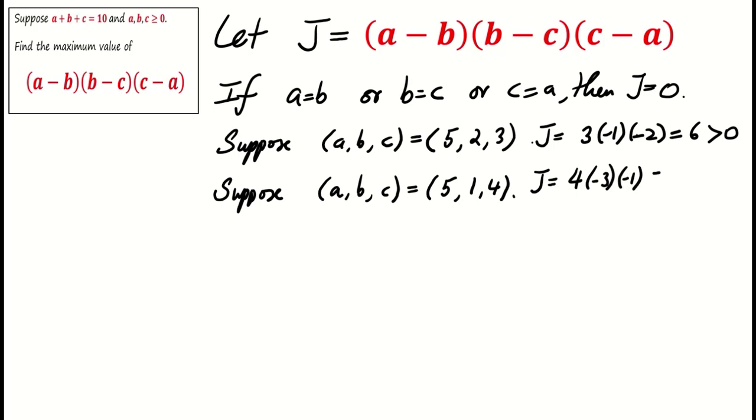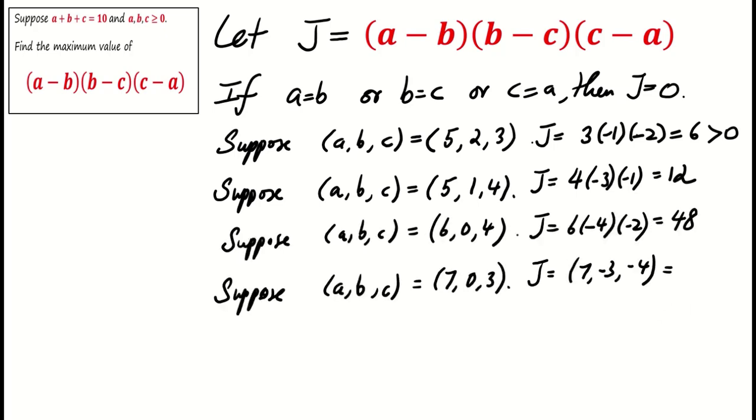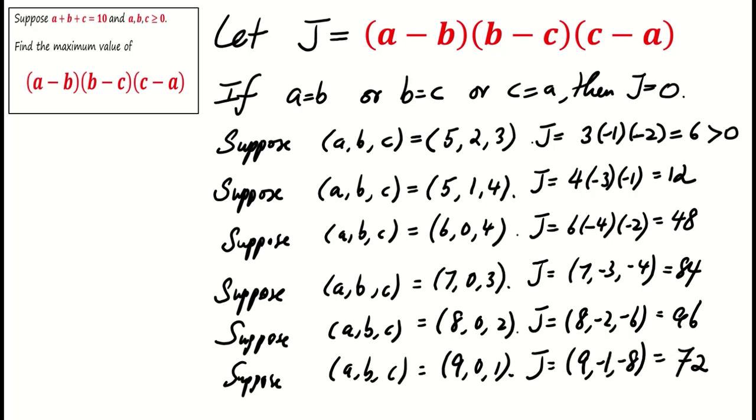Let's explore different values of a, b, c and their corresponding J values. An interesting observation arises: J appears larger when b equals zero.